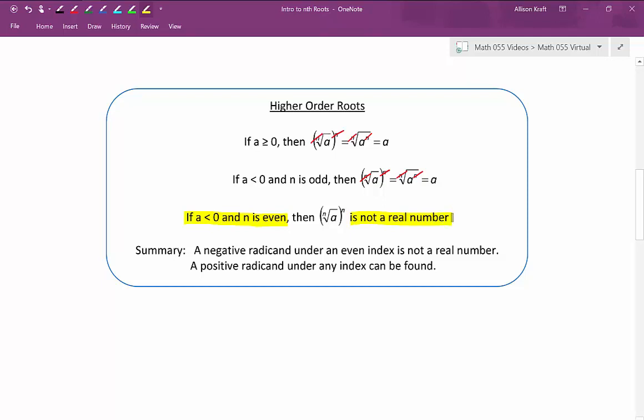The square and the square root, for example, are not going to cancel out and leave us with just the radicand if that radicand is negative. So to summarize, a negative radicand under an even index is not a real number. Everything else is okay. A positive radicand under any index can be found.